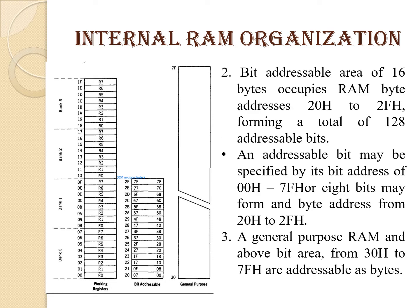The bit-addressable area of 16 bytes occupies RAM byte addresses 20H to 2FH, forming a total of 128 addressable bits. An addressable bit may be specified by its bit address from 00H to 7FH, or 8 bits may form a byte address from 20H to 2FH. The general purpose RAM above the bit area, from 30H to 7FH, is addressable as bytes.